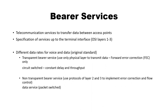All the telecommunication services have to transfer the data between the access points, and all these telecommunication services are taken care of by Bearer Services. These services are specified to the first three layers in the OSI layer. Different data rates for voice and data should be done. So here we are going to have two types of Bearer Services: Transparent Bearer Services and Non-Transparent Bearer Services.